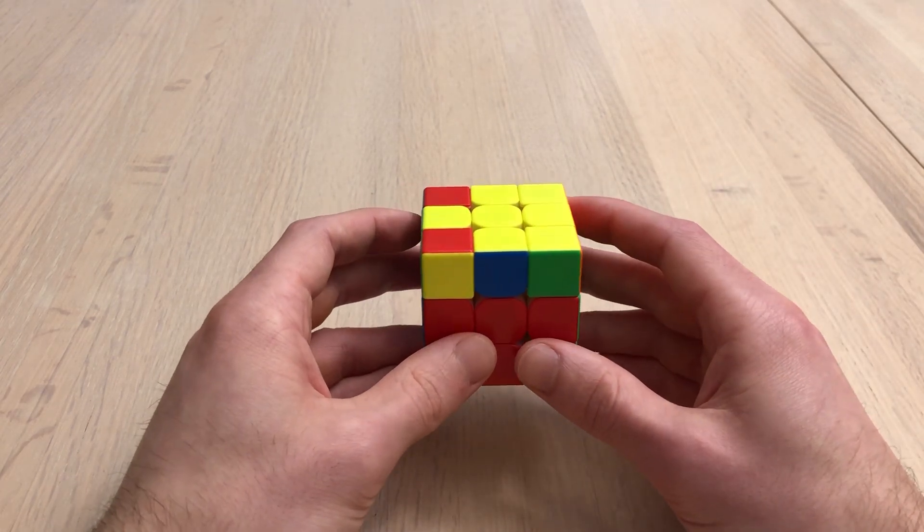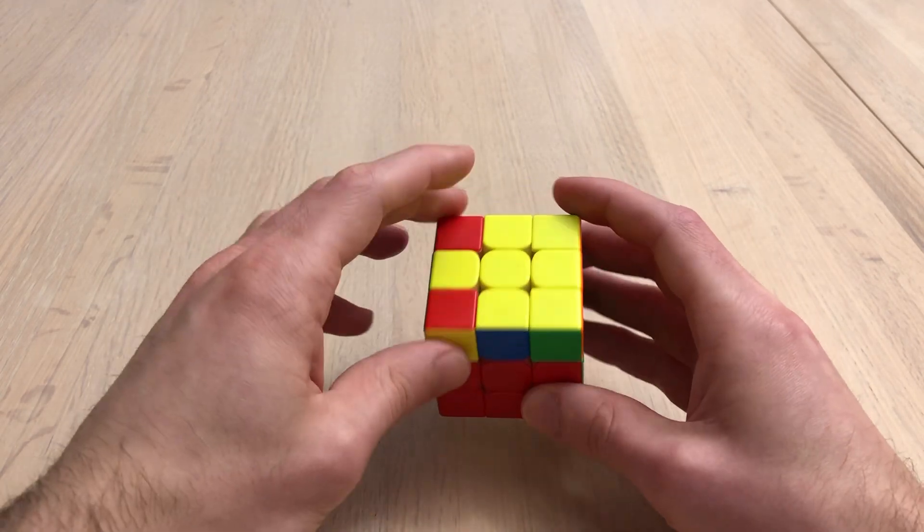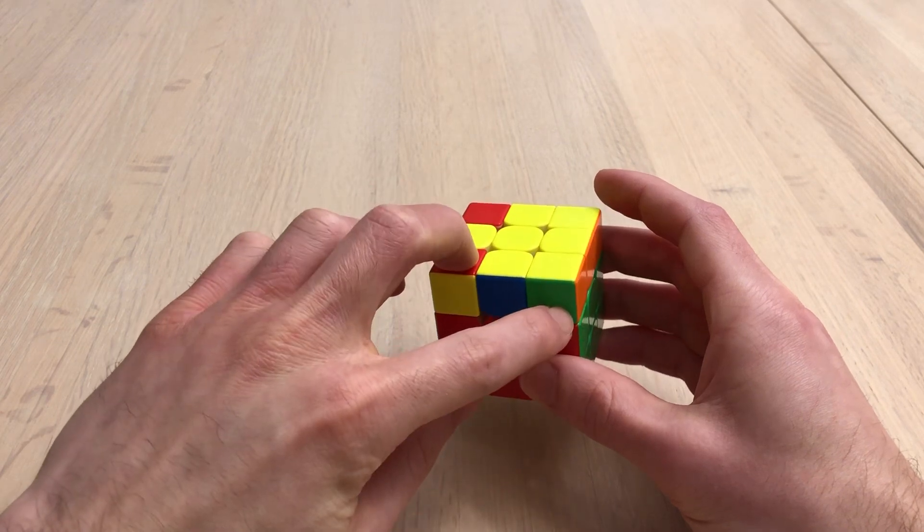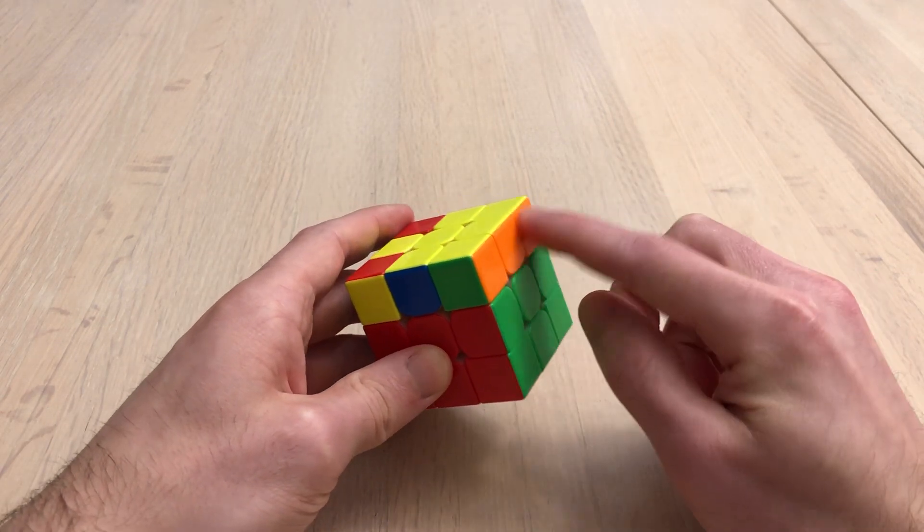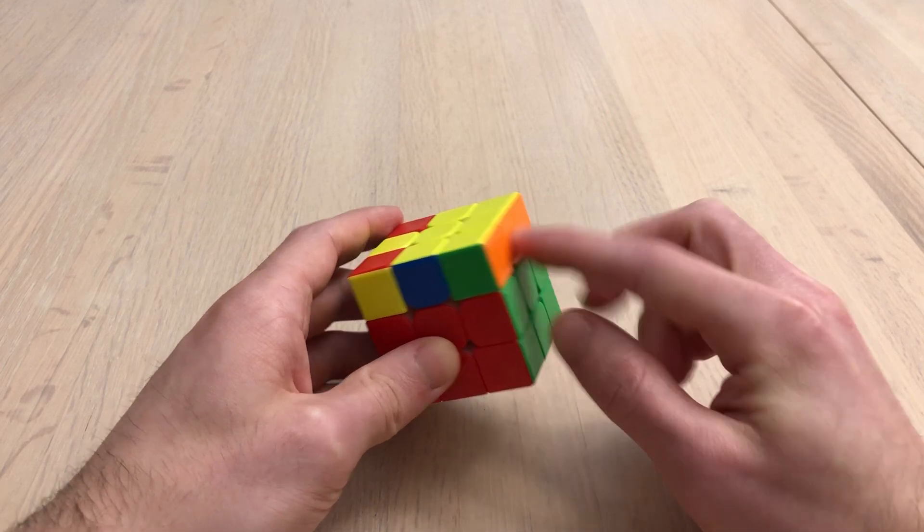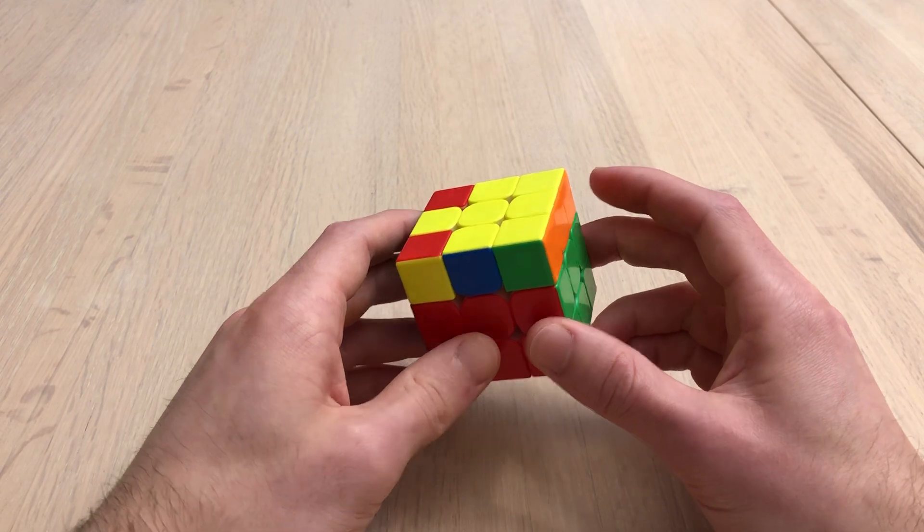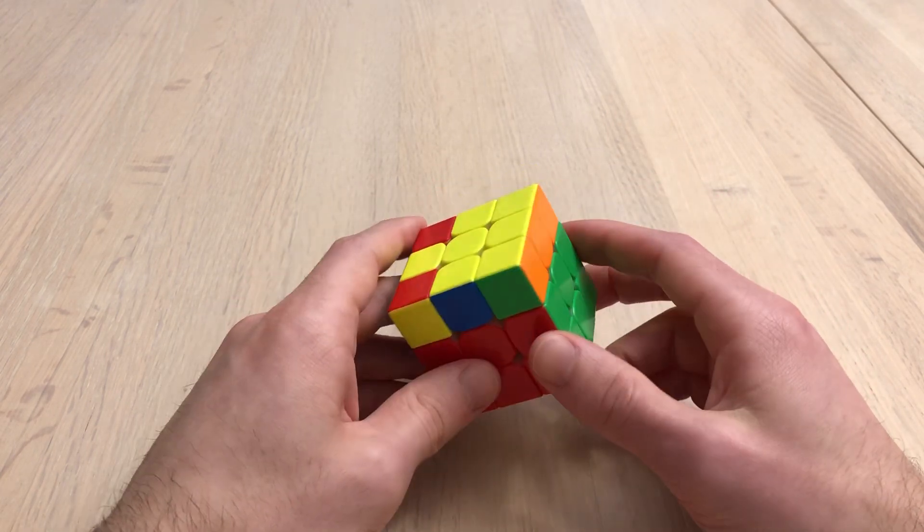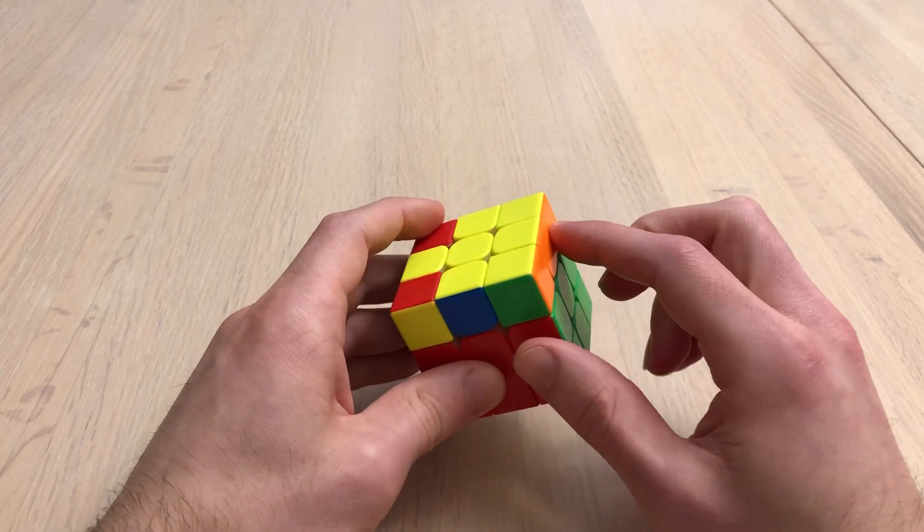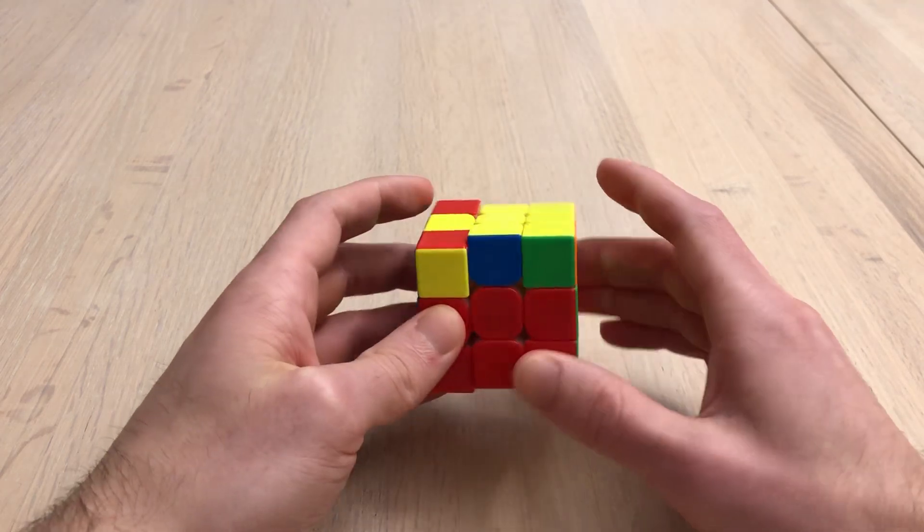But if I know the ZBLLs, I know all of them for this specific case. So this OLL and then these two are adjacent. I know all 12 cases. So I see this bar and these two are opposite. I have to think an extra, say, quarter, half second to recognize that ZBLL case versus just going straight into that OLL.